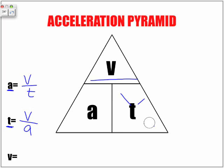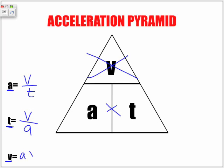For our last one, we're trying to find speed — our V value. So we're going to cover up V, and we notice that A is side by side with T, which means to find our speed, our V value, we're going to take our A value, which is our acceleration, and multiply it by time.